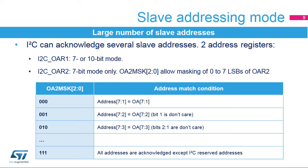The I2C slave can acknowledge several slave addresses, which are programmed into two registers. Own Address Register 1 can be programmed with a 7- or 10-bit address. Own Address Register 2 can be programmed with a 7-bit address, but the least significant bits of this address can be masked through the OA2MSK register in order to acknowledge multiple slave addresses. The two Own Address Registers can be enabled simultaneously.